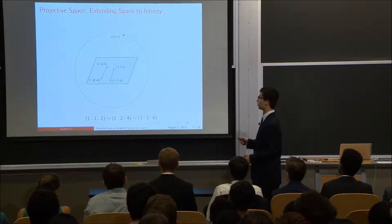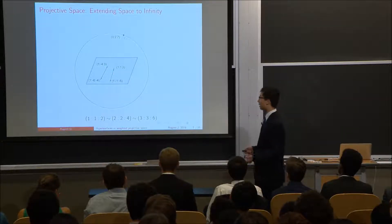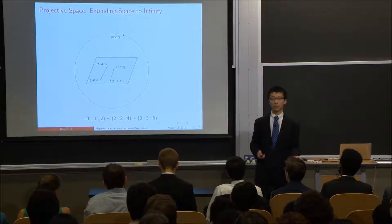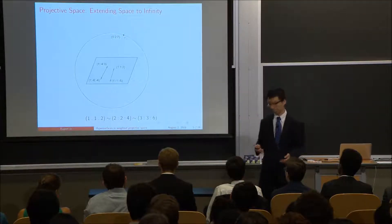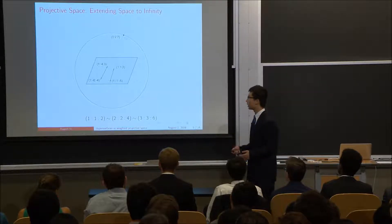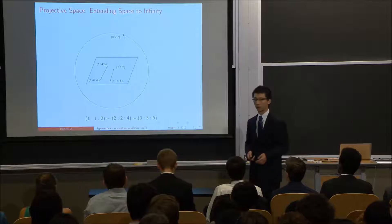So this point is 0, 2, 7. And that actually means that all the lines that pass through it have a slope of 7 halves. And again, 7 halves is a ratio. So it's the same as 14 over 4, which is why this point is also the same as 0, 4, 14. So as you can see, those colons represent that this space is invariant under scaling.